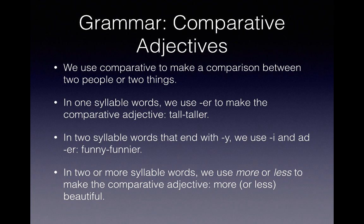Grammar: Comparative Adjectives. We use comparative adjectives to make a comparison between two people or two things. In one-syllable words, we use -er to make the comparative adjective — for example, tall, taller. In two-syllable words that end with y, we use -i and -er — for example, funny and funnier.